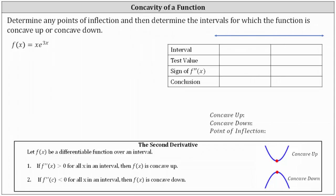We're asked to determine any points of inflection and then determine the intervals for which the function is concave up or concave down. Remember, the sign of the second derivative indicates the concavity of a function. If f is a differentiable function over an interval, if the second derivative is greater than zero for all x in the interval, then f of x is concave up. If the second derivative is less than zero for all x in an interval, then f of x is concave down. And where a function changes concavity, we have a point of inflection.